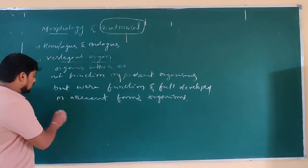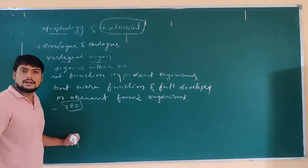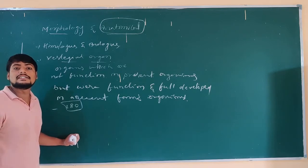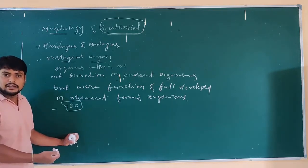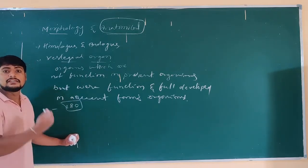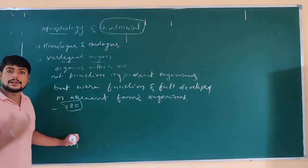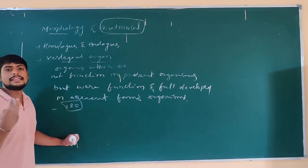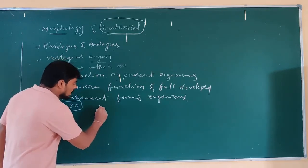There are around 180 vestigial organs in our body. In human beings, around 180 vestigial organs are present. Along with the functioning organ systems, our body also carries these non-functioning organs. That is, useful and waste organs are both present. Due to this reason, the human body is called a moving museum.